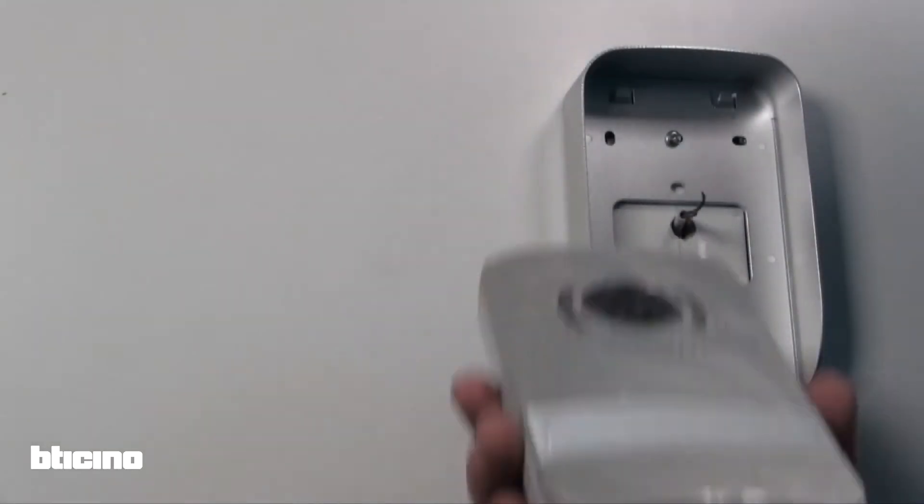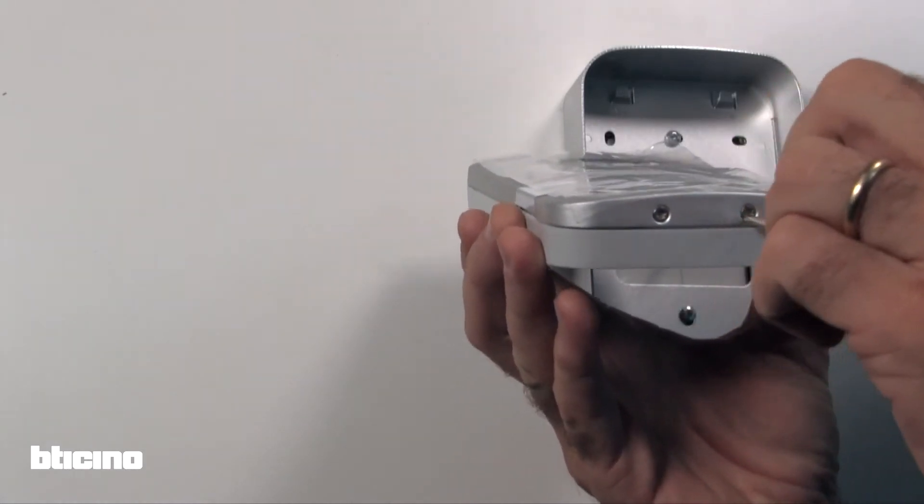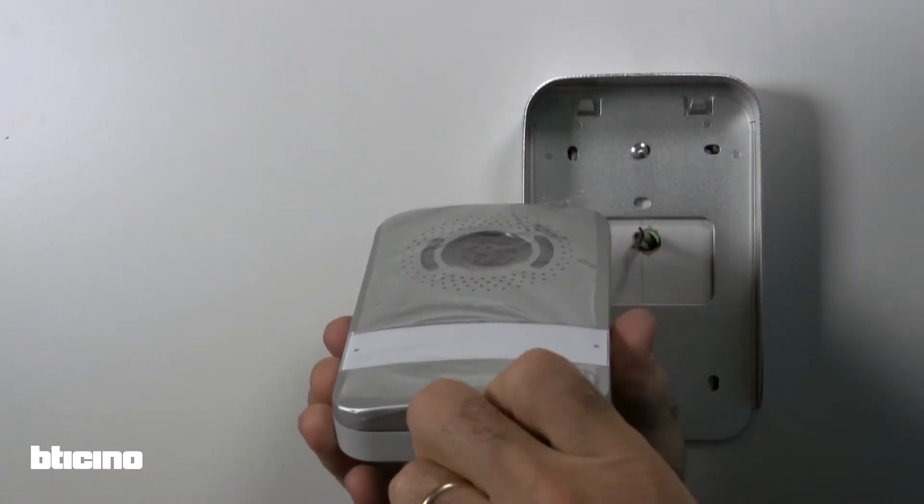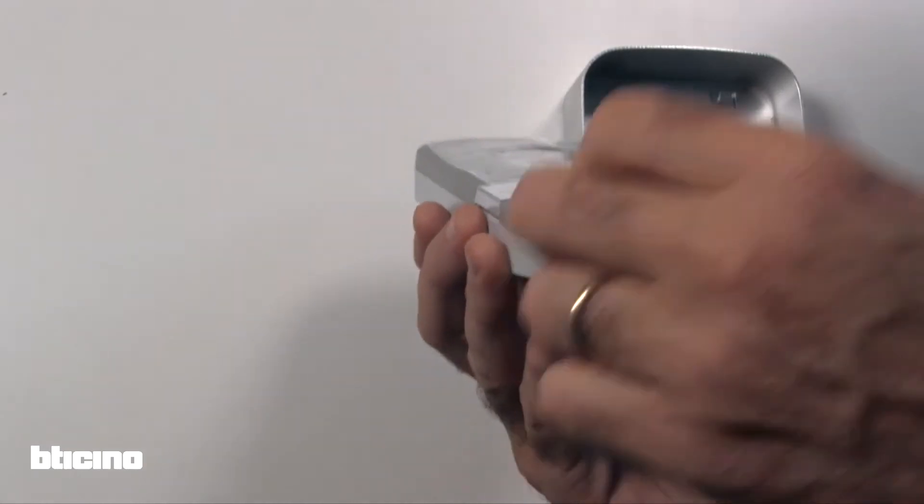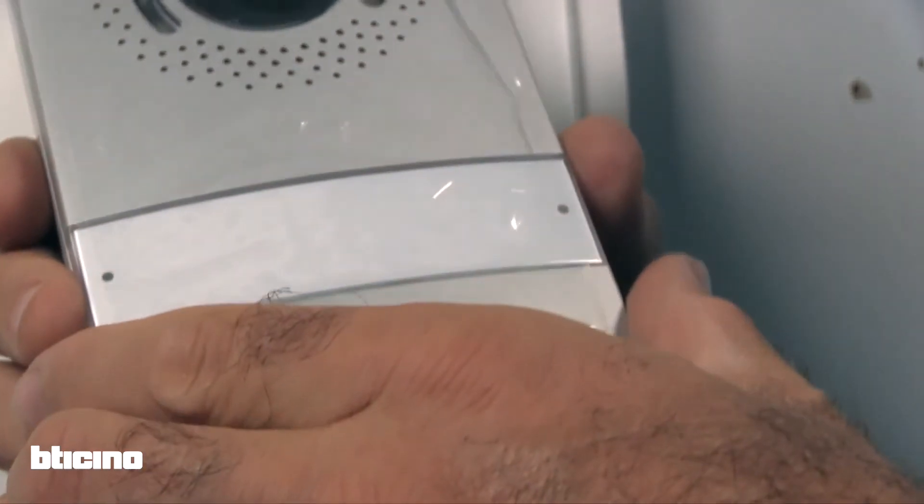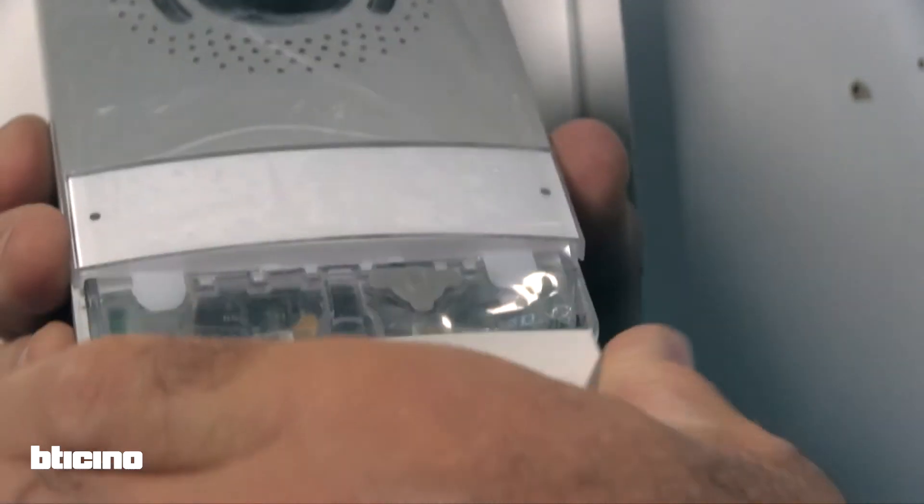Next, open the external module, unscrewing the two Torx screws with the included key. Remove the lower cover to access fixing screws to mount the unit.